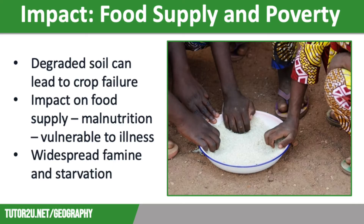Our second impact of desertification is food supply and poverty. Desertification has a huge impact on the food supply of local communities. Soil degradation and a lack of water means the soil will lose fertility and, without nutrients, it will struggle to sustain plant growth. This often leads to crop failure where whole harvests are lost, causing malnutrition and making people more vulnerable to illness. In extreme cases this can lead to widespread famine. Food insecurity also means farmers lose their only income, leading to long-term impacts such as inability to afford medication, increased deaths, and children unable to attend school. On a global scale, desertification can lead to increased food prices in other countries as crops become scarce.